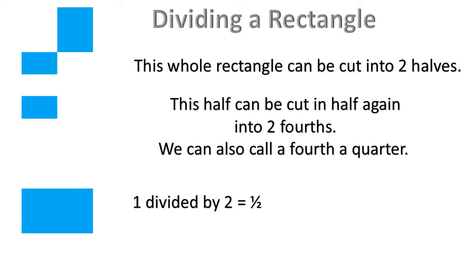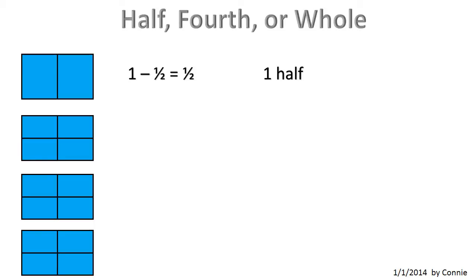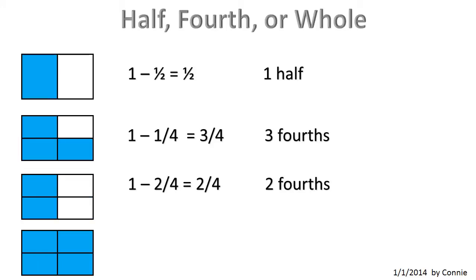1 divided by 2 equals 1 half. 1 half divided by 2 equals 1 fourth. Half, fourth, or whole. 1 minus 1 half equals 1 half. 1 minus 1 fourth equals 3 fourths. 1 minus 2 fourths equals 2 fourths, or 1 half. 1 minus 3 quarters equals 1 quarter.